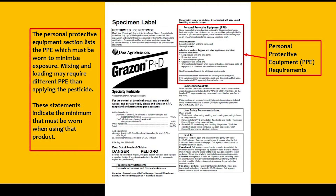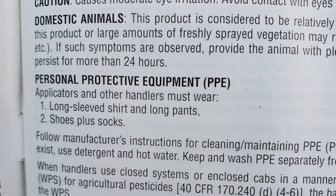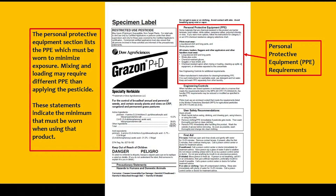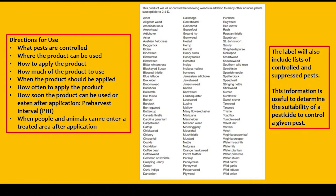The personal protective equipment section lists the PPE which must be worn to minimize exposure. Mixing and loading may require different PPE than applying the pesticide. These statements indicate the minimum amount of protection that must be worn when using the product. This can be found on the front of the label or in other areas of the label, so be sure to read the entire label to find what you need.